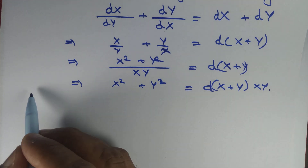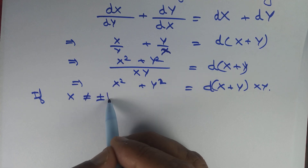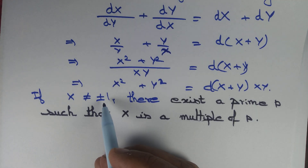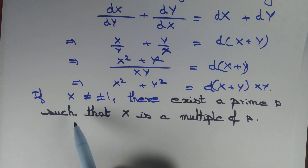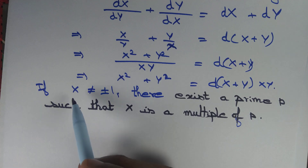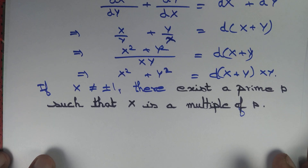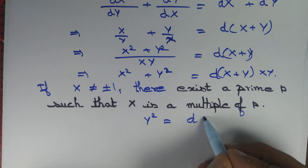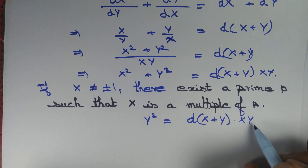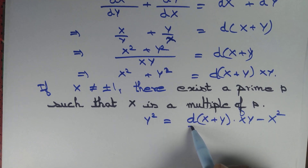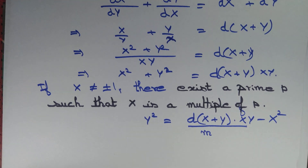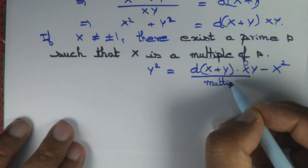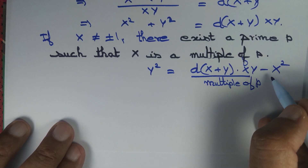Now if X is not equal to ±1, then there exists a prime p such that X is a multiple of p. We can take any prime factor of X and that prime factor will divide X. From this equation we can write Y² = d(X + Y)·XY − X². This quantity is a multiple of p, and this quantity is also a multiple of p.